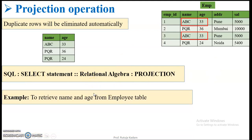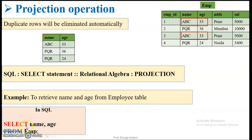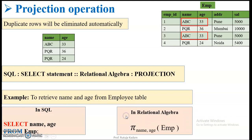Let us consider an example. I want to retrieve the name and age from the employee table. In SQL, I would write: SELECT name, age FROM employee. Now if I want to write the same thing in relational algebra, I will use projection. I write PI with the subscript name and age — that is the attribute list I want to project — and the relation name is emp. So projection and SELECT statement are similar.